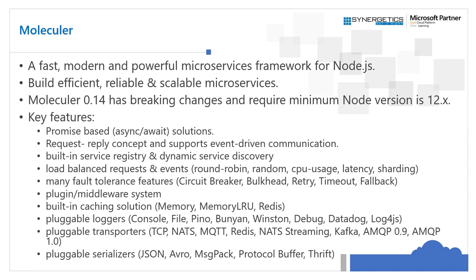Molecular is a JavaScript framework that runs on Node.js runtime for building powerful microservices. You can create efficient, reliable and scalable microservices using Molecular. Molecular 0.14 is the latest version currently available, which has some breaking changes and requires a minimum Node.js version of 12.x. Whenever you refer to the documentation, make sure you are referring to the latest documentation of Molecular.